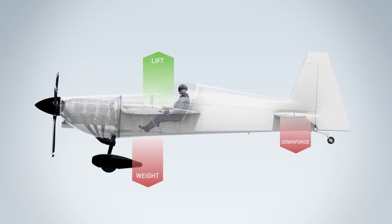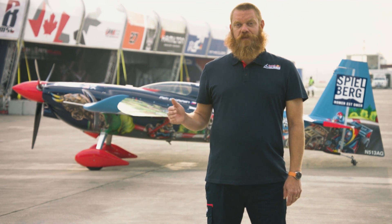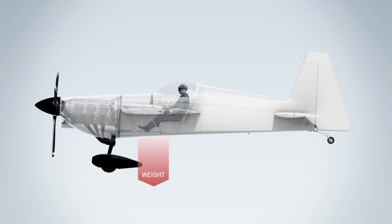If you shift weight around in the aircraft, you can shift the CG point as well. If you move the weight more towards the tail, as most of the race teams do, you will have what we call a more aft CG.